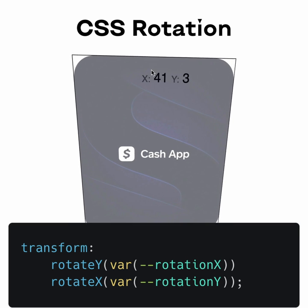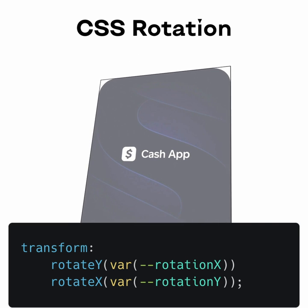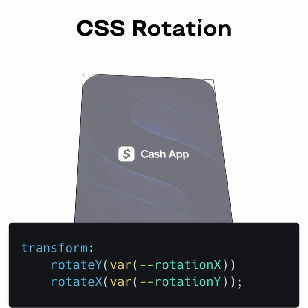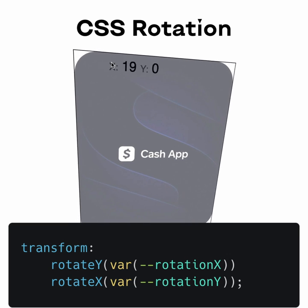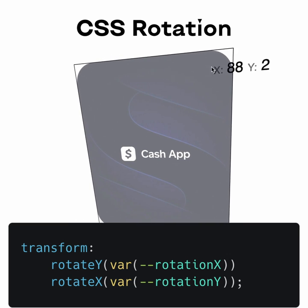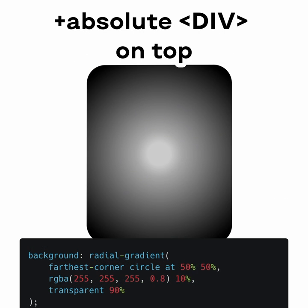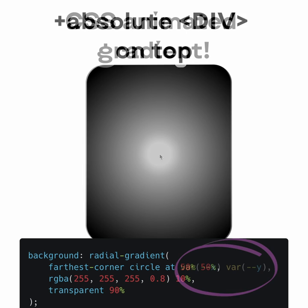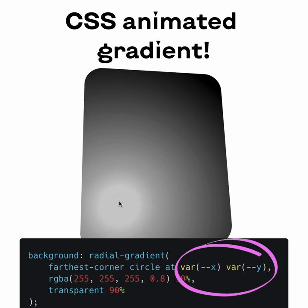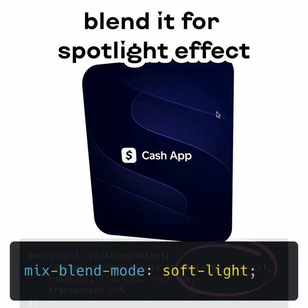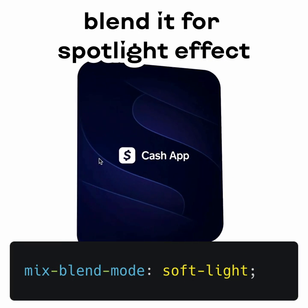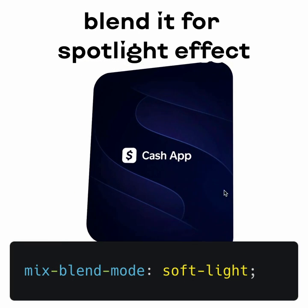Now we can animate mesh without any more JavaScript. Now let's add a CSS gradient on top. We can animate it with CSS variables, and if we set a blending mode, we're gonna get a subtle spotlight effect.